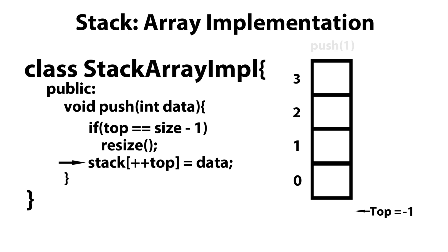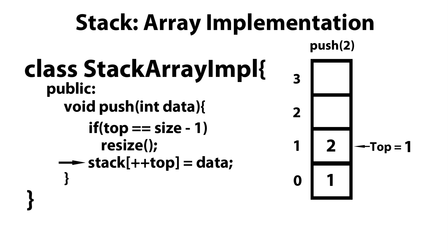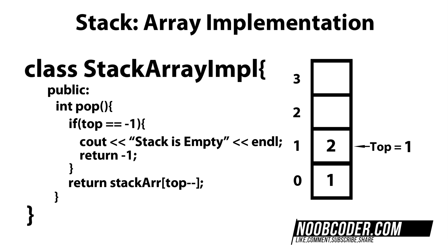Let's say I want to push one on top of the stack. We're going to pre-increment top — right now top is equal to minus one, so pre-incrementing gives us top equal to zero. Then stack sub zero is assigned the data we want to push. Now let's say I want to push two. We check to see if top equals three — it doesn't, so we skip the if statement. We pre-increment top from zero to one. So now stack sub one is assigned data, and we've effectively pushed two on top of the stack.